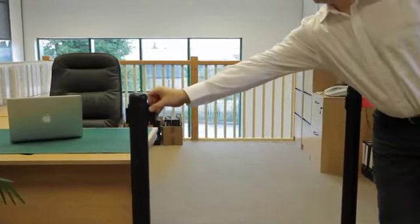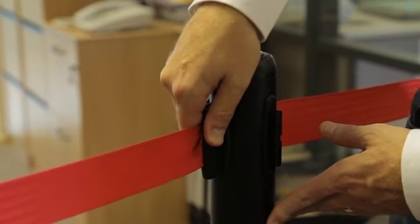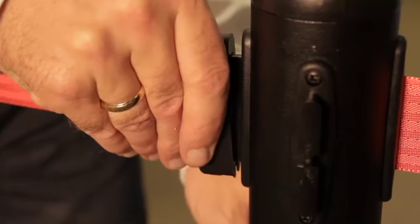To fasten the belt, simply clip it on to the receiving bracket. Once connected, it will remain in place until you push the connector forward to release the belt.